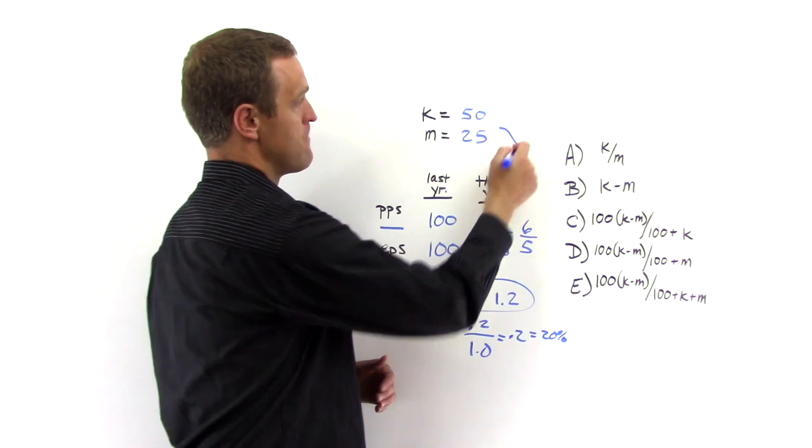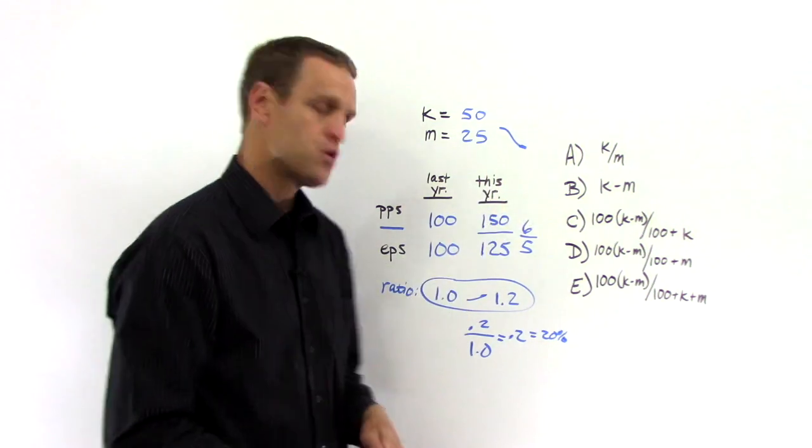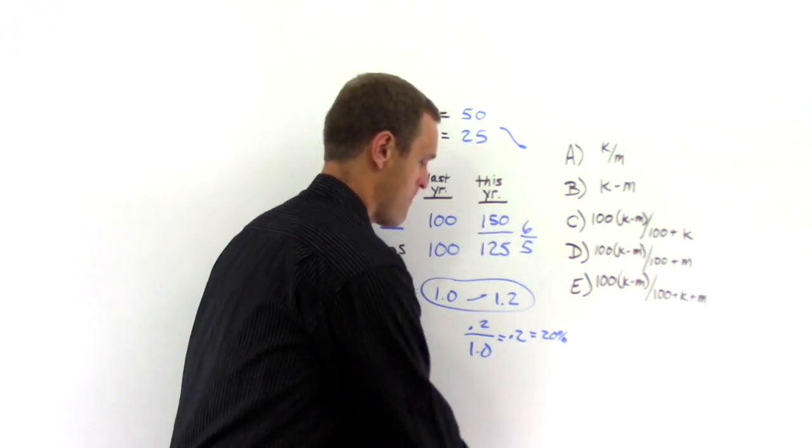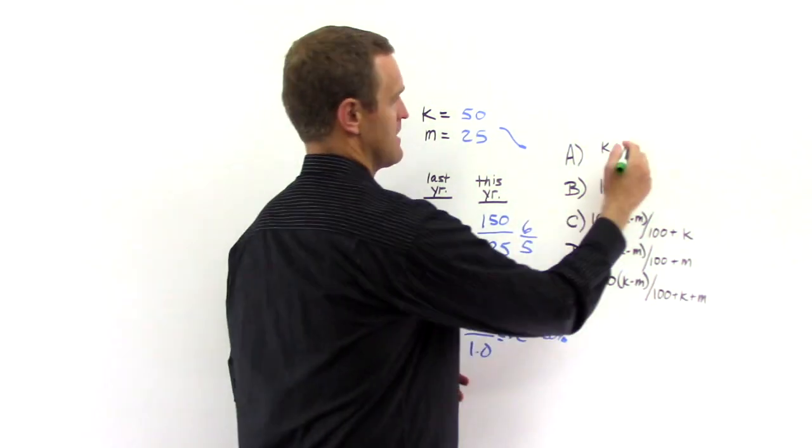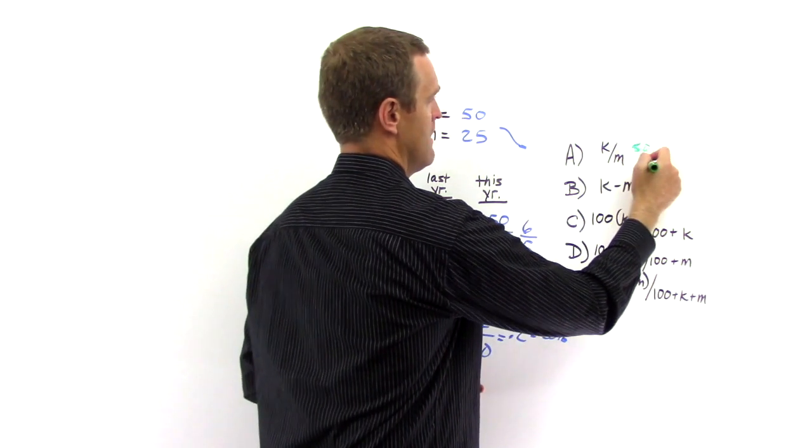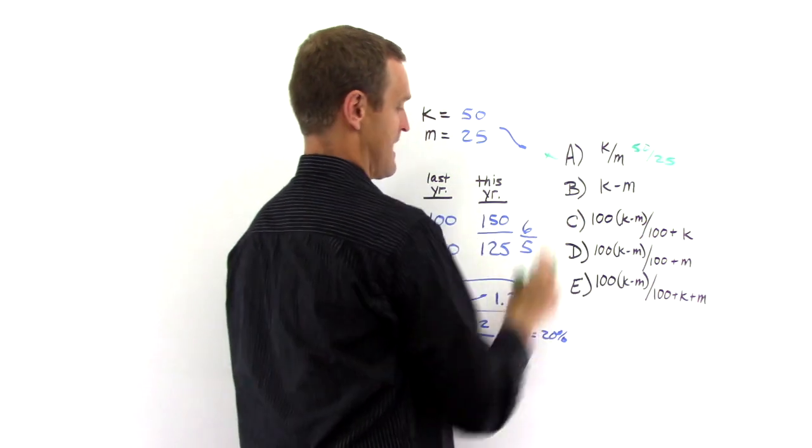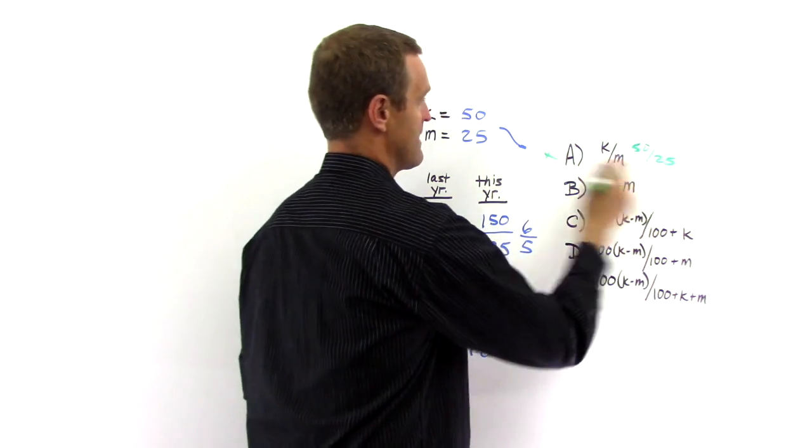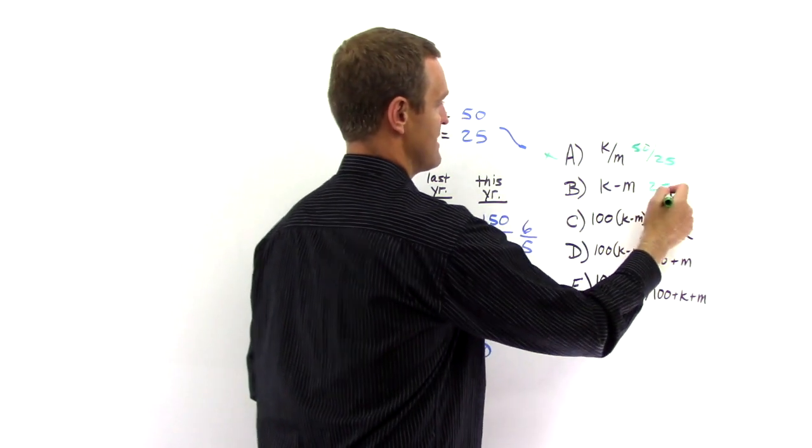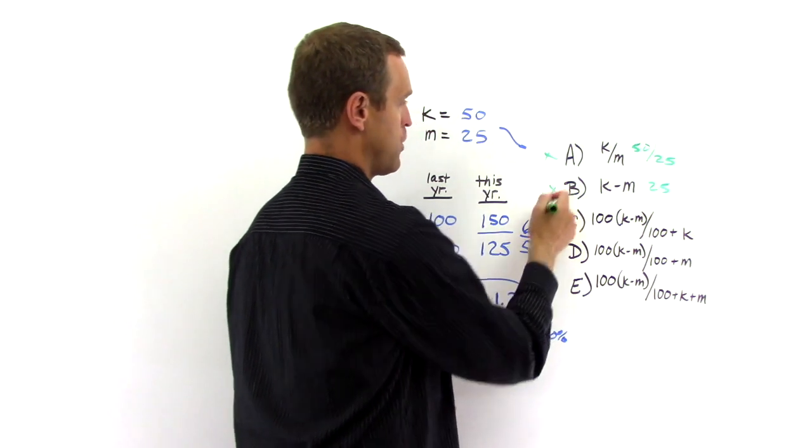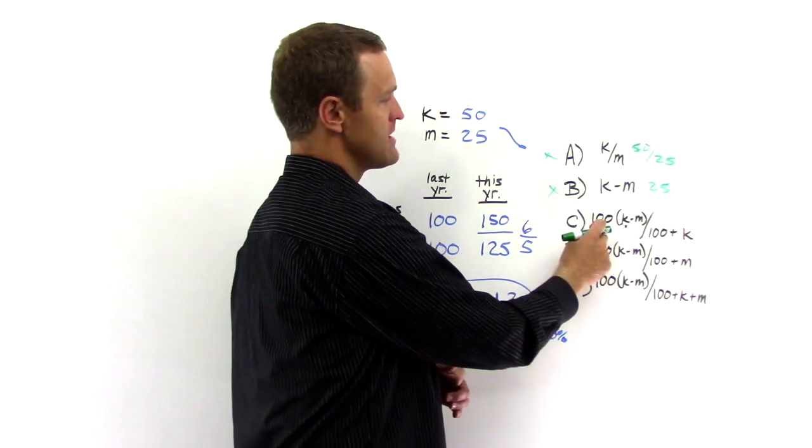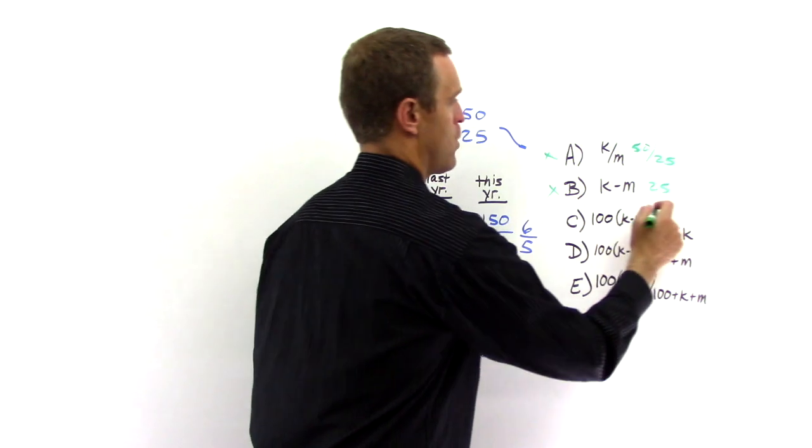And now we just take our made-up values, plug them into the answer choices, and let's see which one matches. K over M, obviously 50 over 25 is 2, does not equal 20%. K minus M, 50 minus 25 is 25, does not equal 20%. 100 times K minus M, so that's 2,500, compared to 100 plus K, 150, that's not going to be 20%.